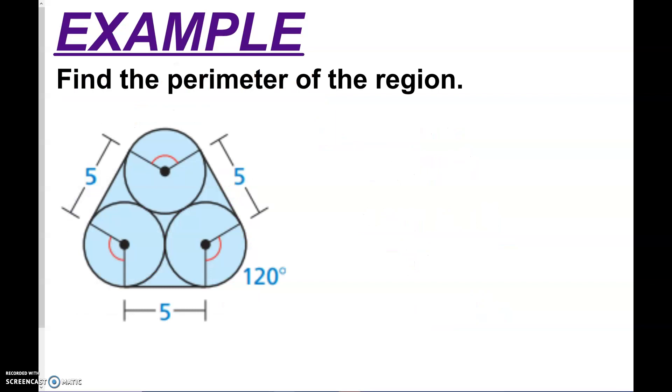All right. Find the perimeter of the shaded region. Find the perimeter, which means this distance going around with these curves and the straight edges. So it looks like we've got some 1, 2, 3 straight edges. So I'm going to do 3 times 5. I get 15 for those straight edges.